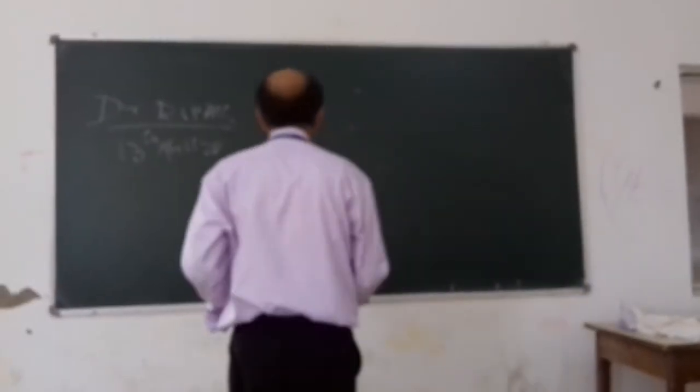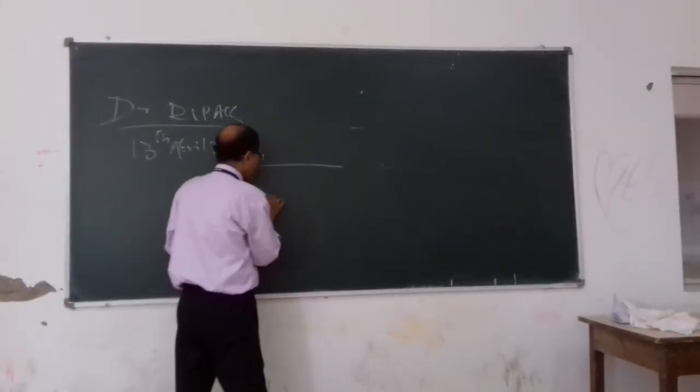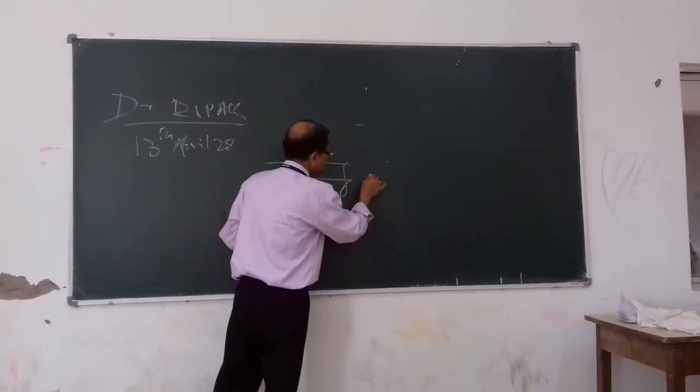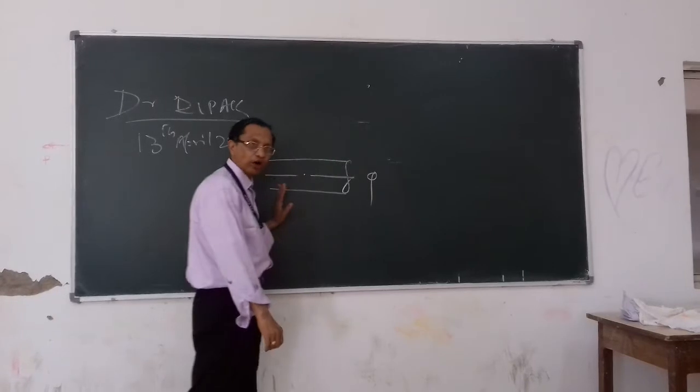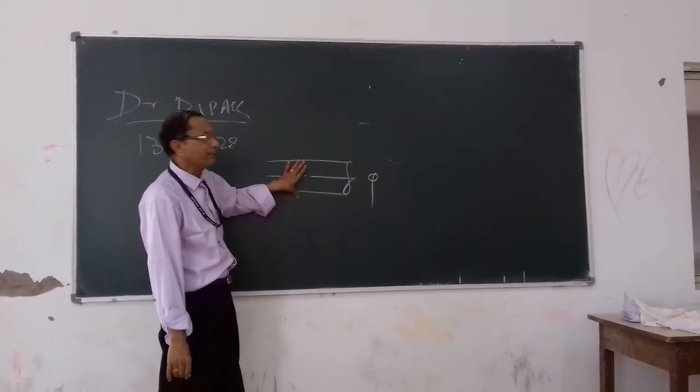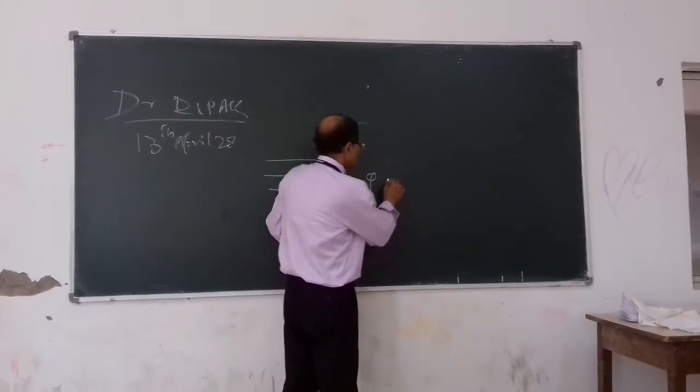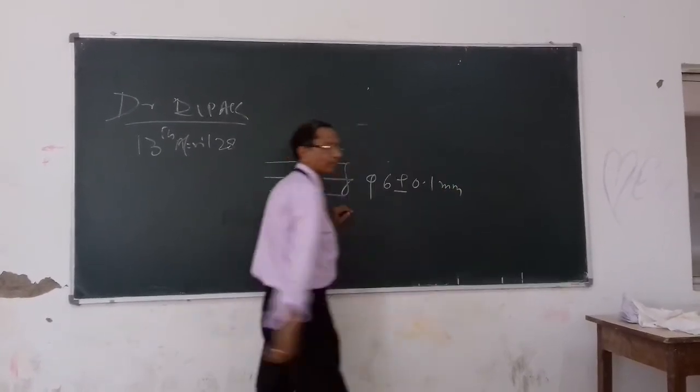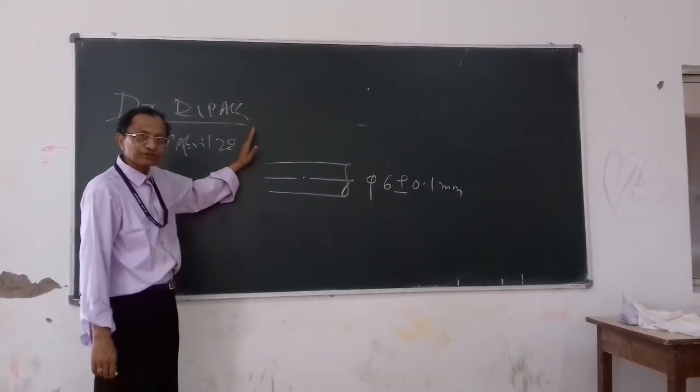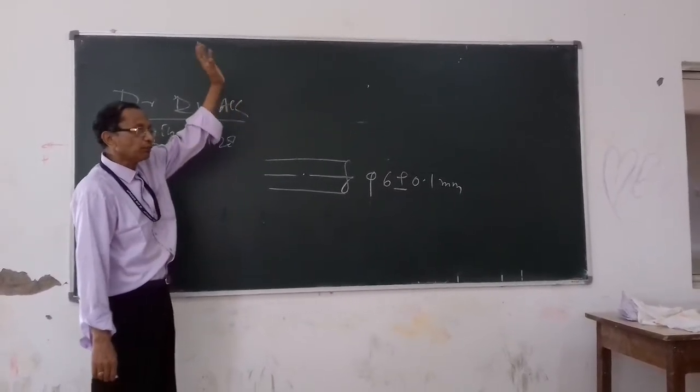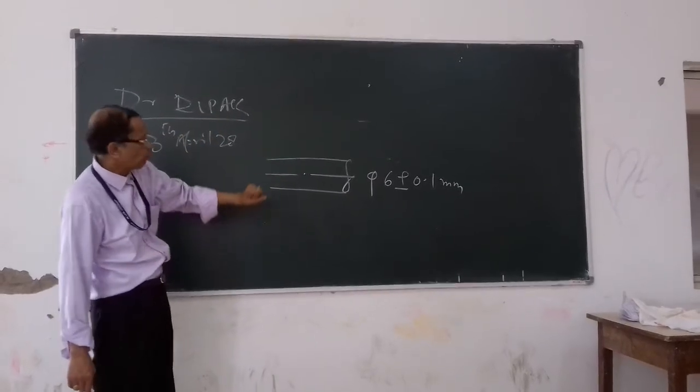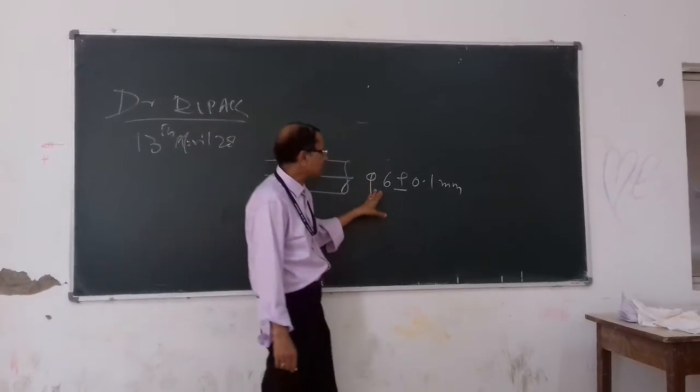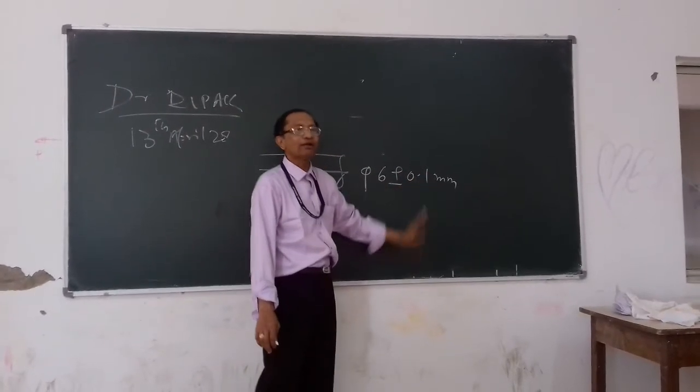Here, we emphasize that, suppose, we want to produce one shaft of diameter. Diamond part. See, we want to produce one shaft of diamond, 6 plus minus 0.1 mm. And repeat again. In the production process, if you want to produce one shaft whose diameter should be 6 plus minus 0.1, what does it mean?